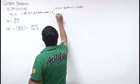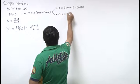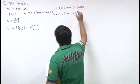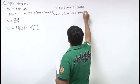What is z minus 1? That is 2 cos theta minus 1 plus 2 sin theta iota.